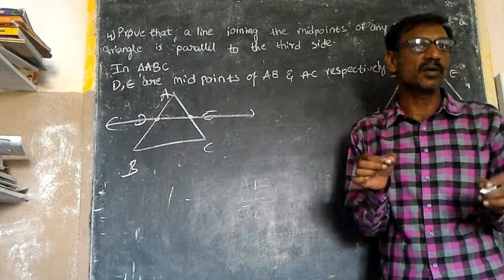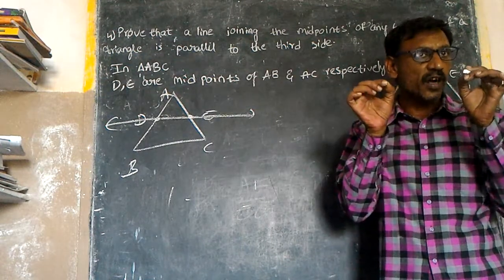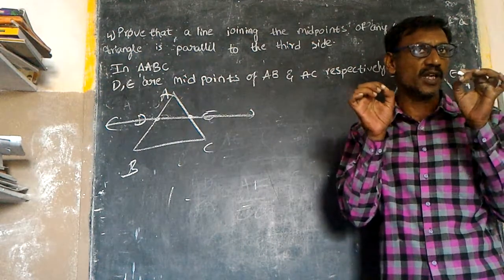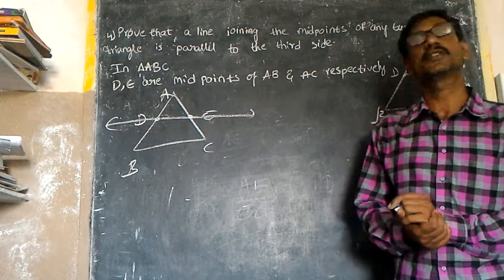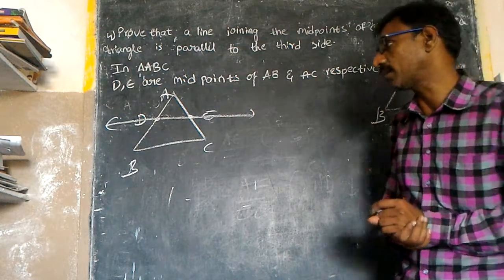In a triangle, when midpoints of two sides are joined by a line, that line is parallel to the third side.